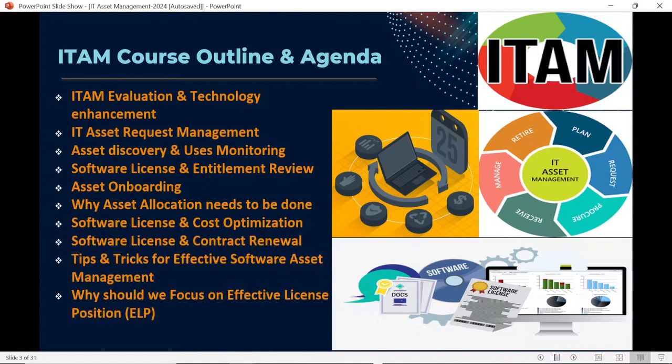We will have a detailed discussion around the Effective License Position (ELP) — what is ELP, what are the basic prerequisites for preparing the ELP, including license entitlement data and software deployment data covering software installation. We will discuss how to do entitlement analysis, understand if we are compliant or non-compliant, identify risks, and how to perform software license remediation to make the organization compliant.